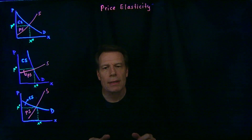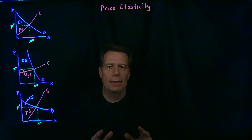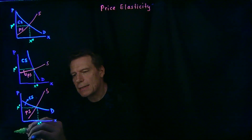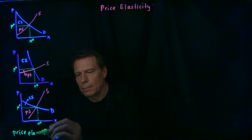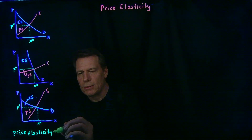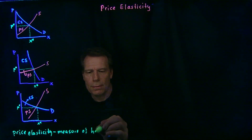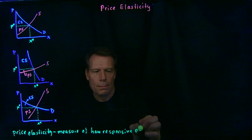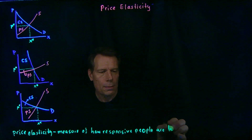So we can see that the relative size of consumer surplus to producer surplus depends on the relative slopes of demand and supply curves. And that takes us to an idea in economics called price elasticity — it's just a measure of how responsive people are to price changes.